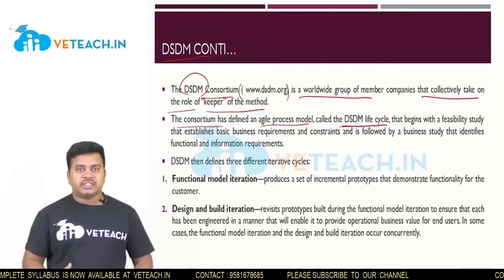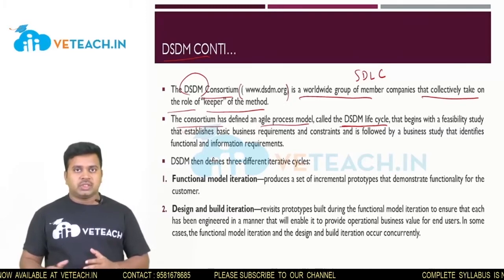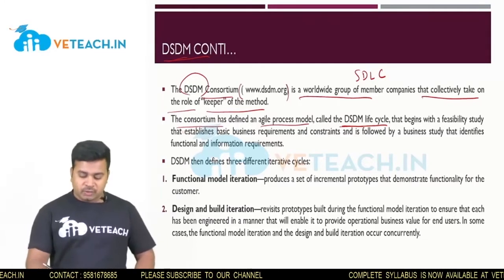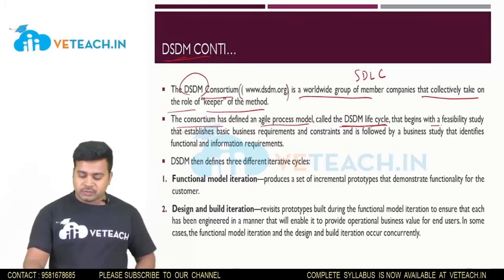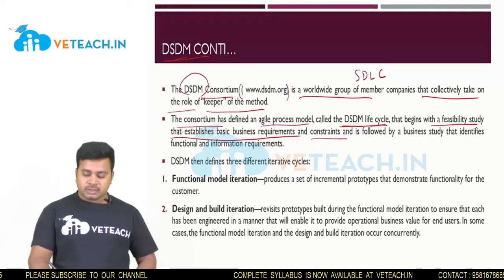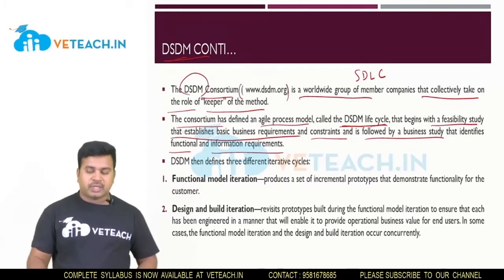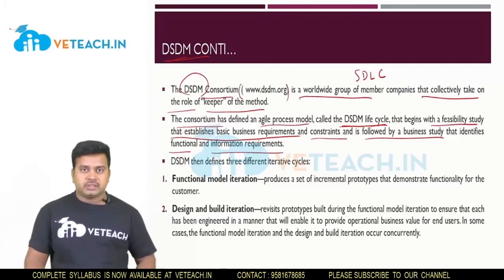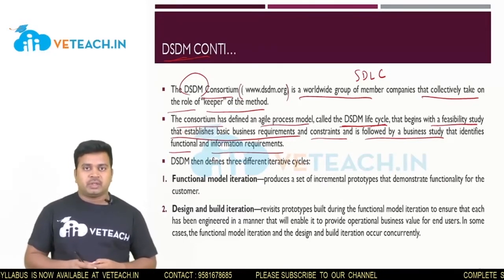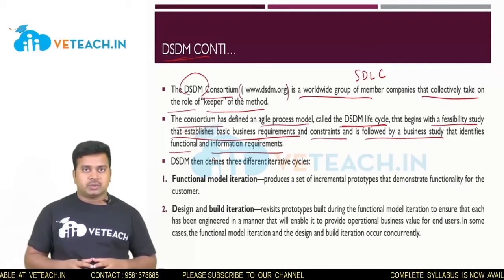We already know about SDLC — the Software Development Life Cycle — which follows some process in the development of any software project. Similarly, the DSDM method also has its own life cycle, beginning from a feasibility study that establishes basic business requirements and constraints, followed by a business study that identifies functional and information requirements. At this phase, you verify whether the project is suitable and will solve user issues.